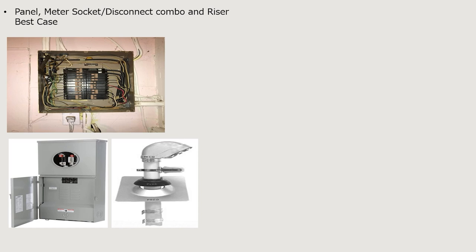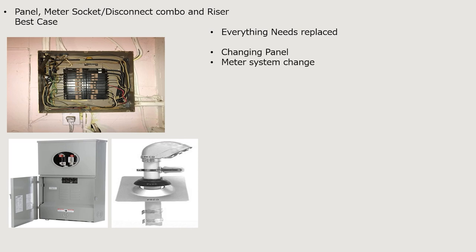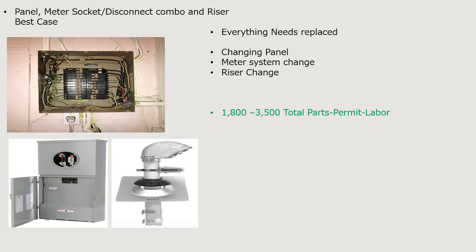Now let's change out the whole thing: panel, meter socket or disconnect combo, and the riser. This is assuming everything needs to be replaced, though we may save some money if the metal pipe through the roof is in good shape. Sometimes it all has to come out due to improper sizing to code. This includes changing the panel, adding a new meter system, and doing a riser change — which adds quite a bit to labor, logistics, material, and planning. You can expect between $1,800 and $3,500 total in parts, permit, and labor.